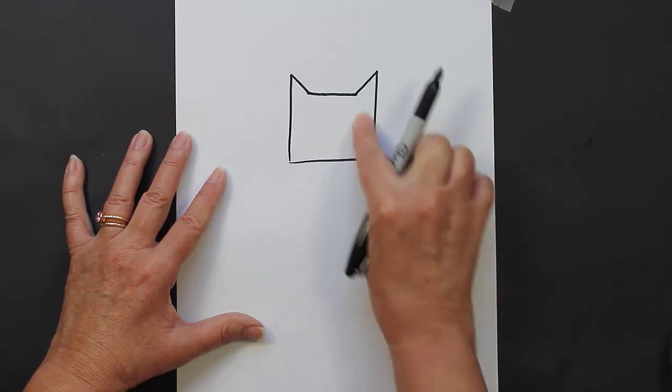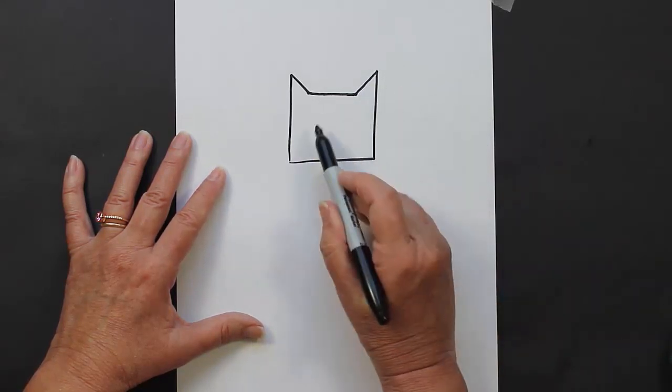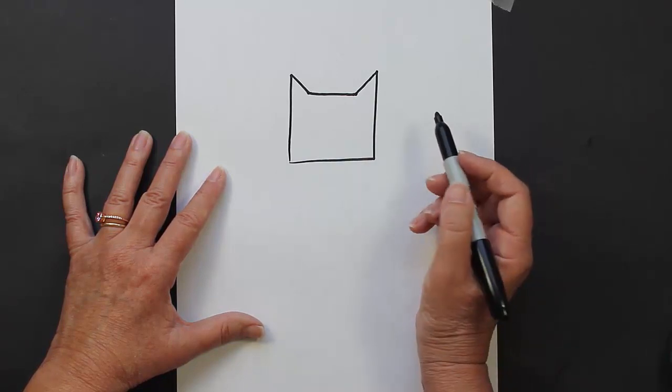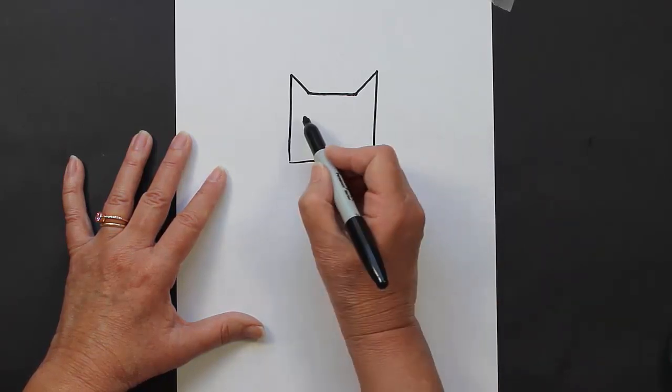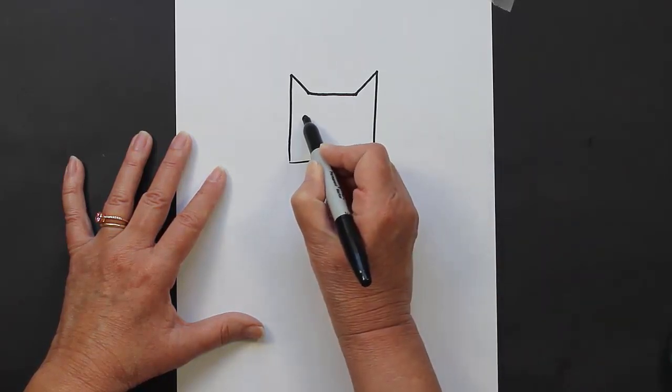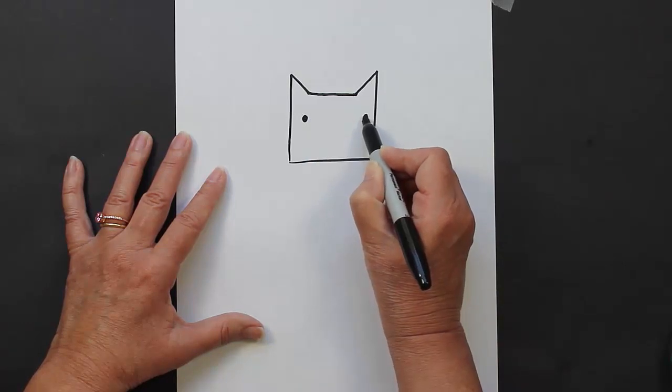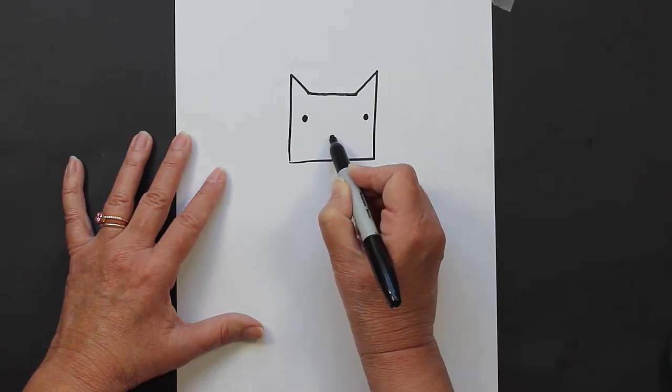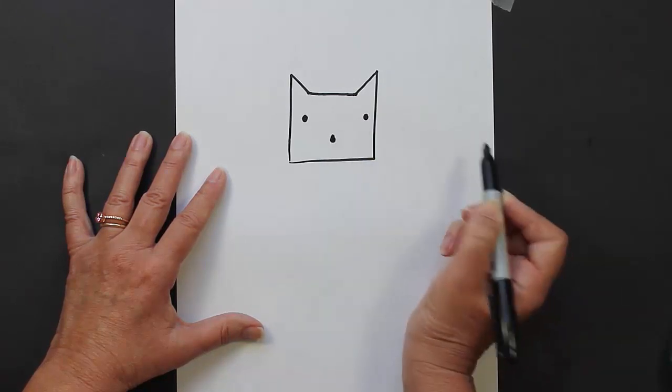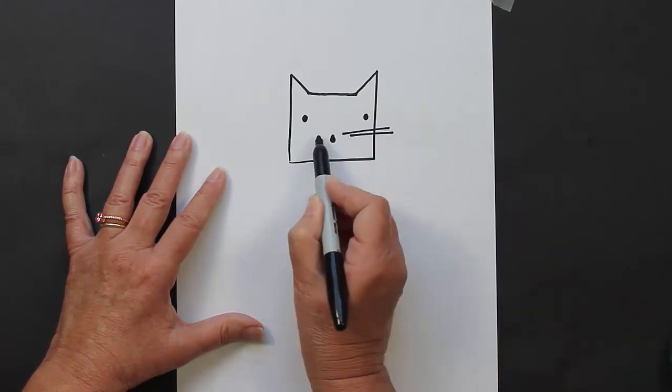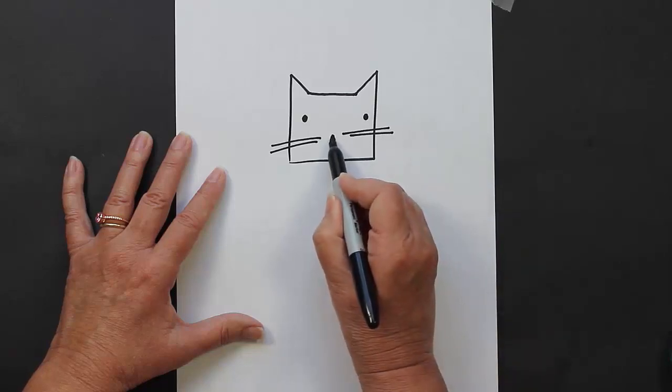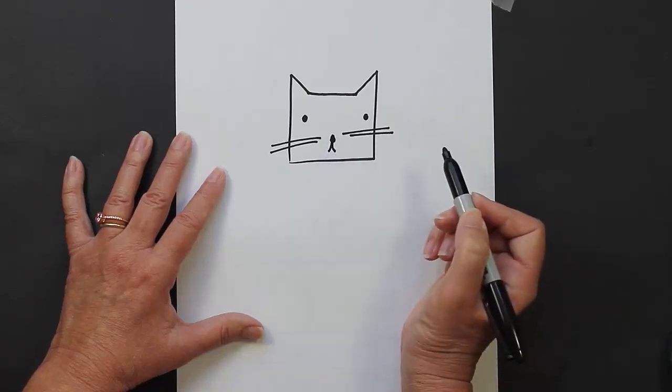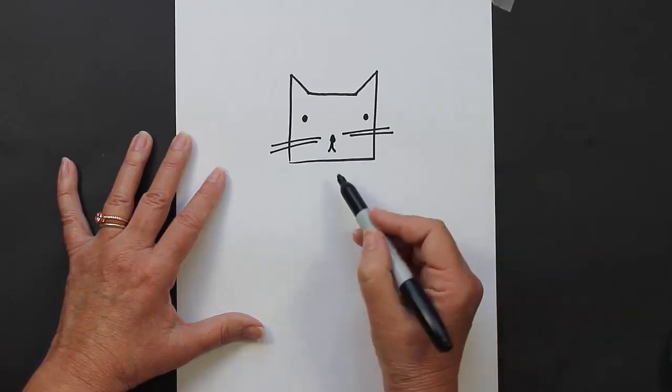So you can decorate the face of your cat any way that you'd like. I'm going to give you a suggestion - I'm just going to put some small dots for the eyes, a nose with some whiskers, and a small mouth.